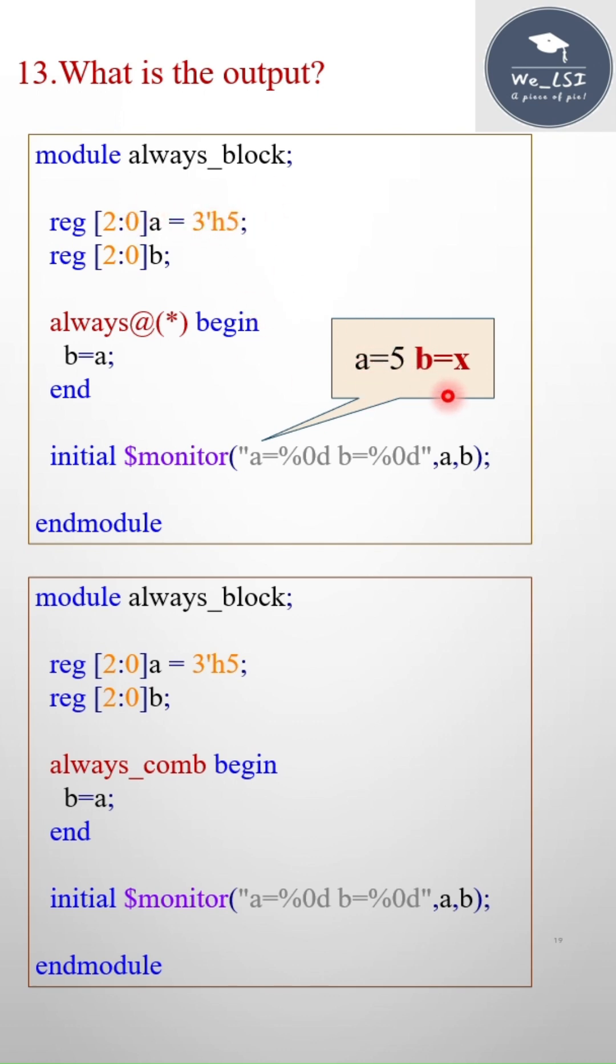But what about b value? Here I have assigned, right, but I am still getting x. This is why: because this always at the rate star block will be executed only when any changes occur to the signal inside the sensitivity list. But here a equals to 5, a has not changed, that's why it has not entered the always block.